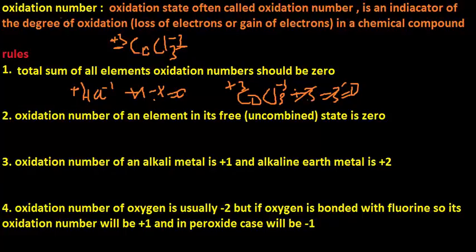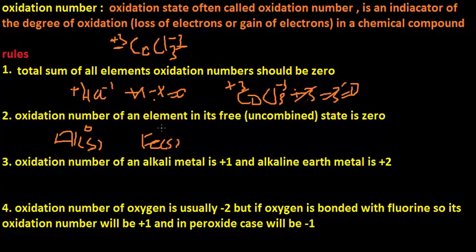Rule number two: the oxidation number of an element in its free state is zero. For example, if we have only aluminium and it is not combined with any other element, its oxidation number would be zero. Same for iron — if it is in a solid, uncombined state, its oxidation state would be zero.